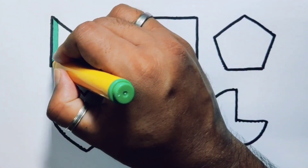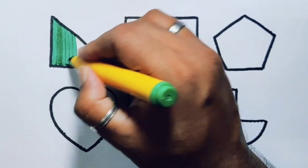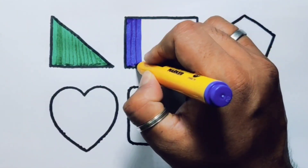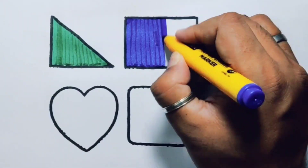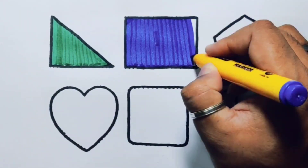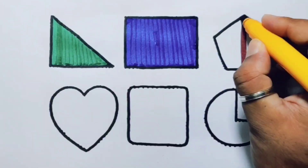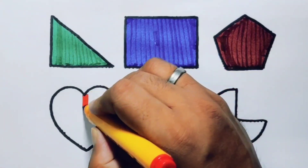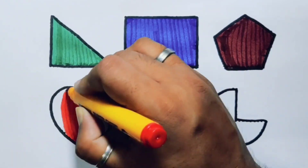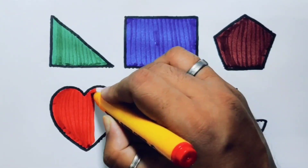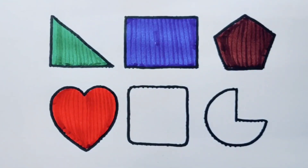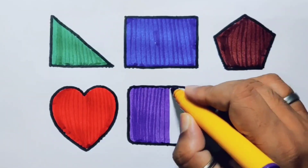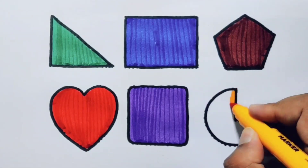Now we're going to put the color. Green color — rectangle. Blue color — rectangle. Chocolate color — pentagon. Red color — heart. Purple color — square. Orange color — pink.